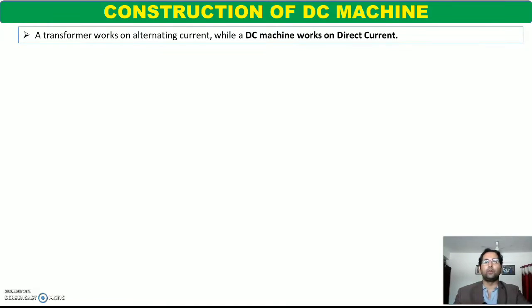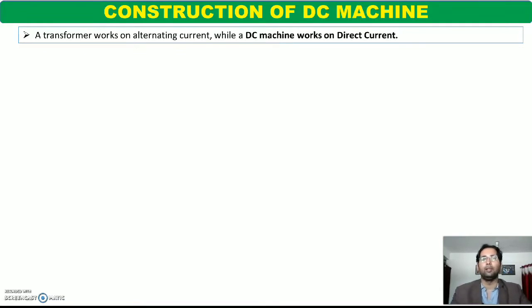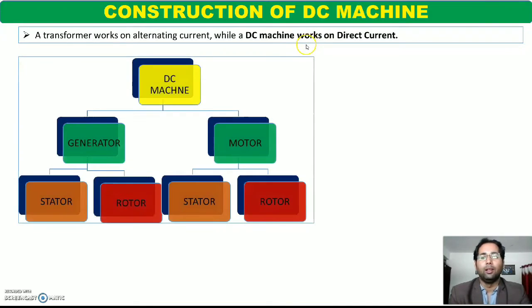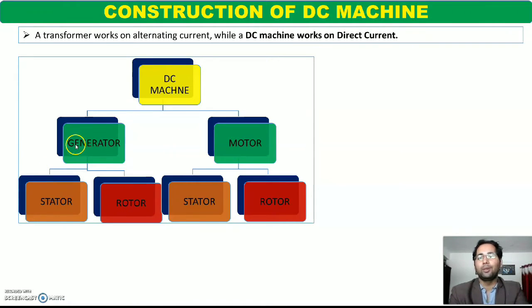The first topic is construction of DC machine. A DC machine always works on direct current. You can compare it to the transformer, which works on AC — alternating current. जबकि DC machine की बात करें, it always works on DC current. DC machine के initial components की बात करें: हर machine में एक generator होगा, एक motor होगा. जो mechanical energy को electrical में convert करे, that is called a generator. जो electrical को mechanical में convert करे, that is called a motor.